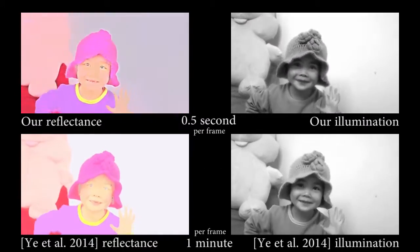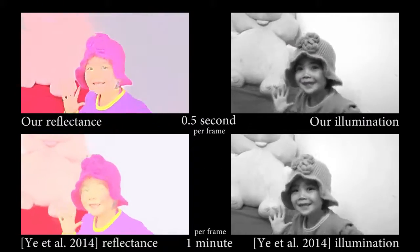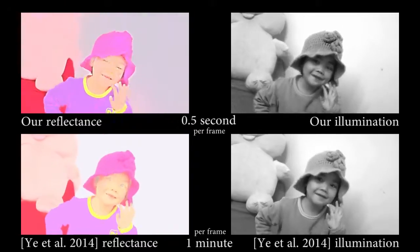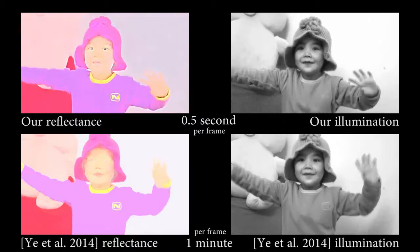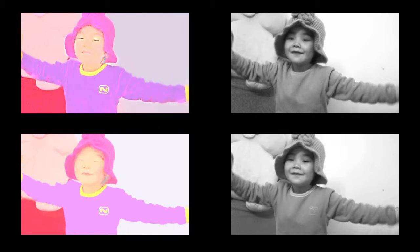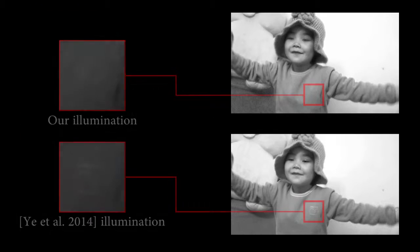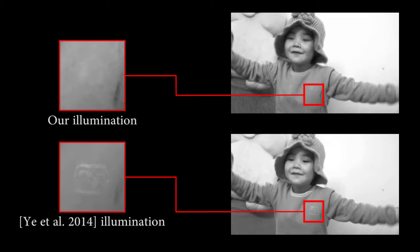In contrast, our method takes half a second per frame and produces comparable results. This speed greatly reduces turnaround time for interaction, allowing an artist to quickly reduce mistakes in the decomposition, such as this constant illumination logo on the shirt which should not appear in the illumination.